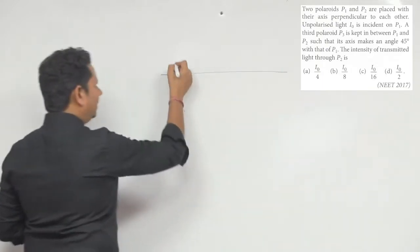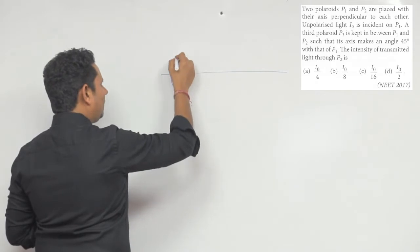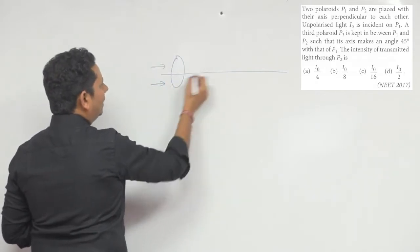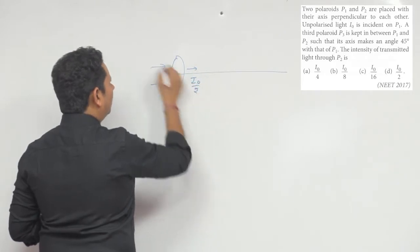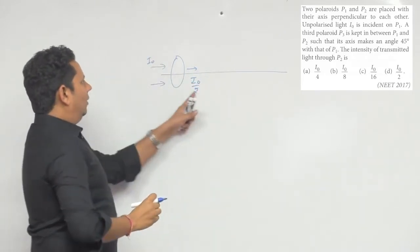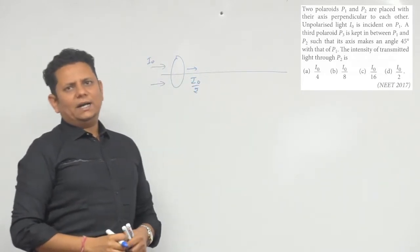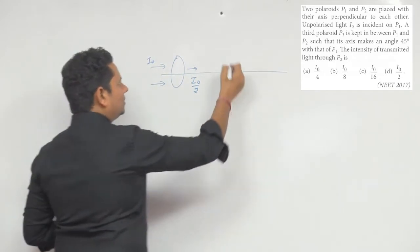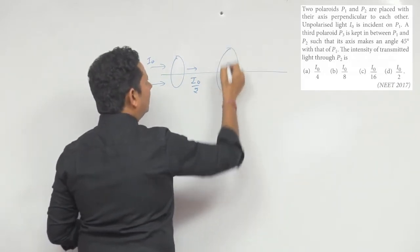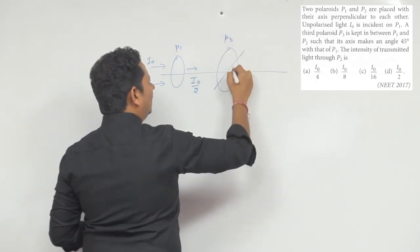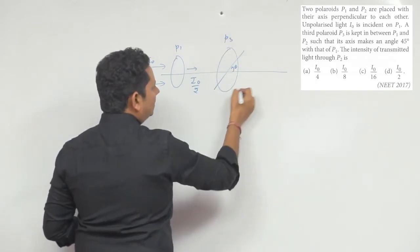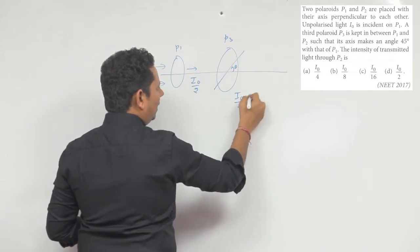Aapka maan lijiye ek pehla polaroid hai. Uspe jab aapke incident light hogi, to usse jab bhi light bahar aegi, woh aegi I0 by 2. I0 aapke incident hai. Uske baad agar hamne ek aur polaroid lagaya is ko P1 kehte, usko P3 kehte, to isse jo light bahar aegi, woh aaegi I not by 2.